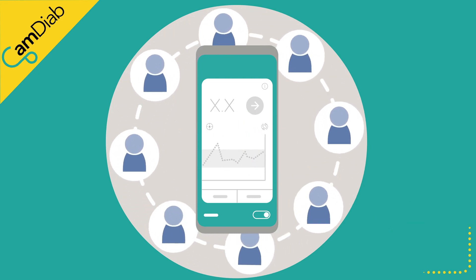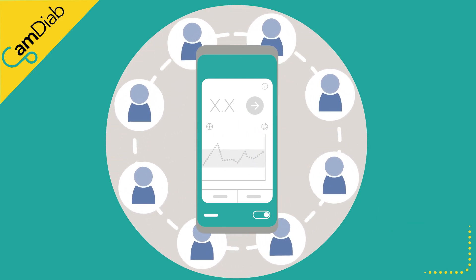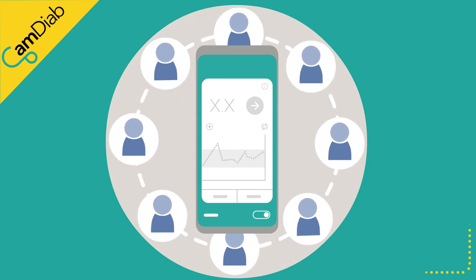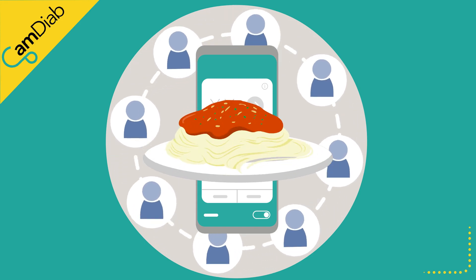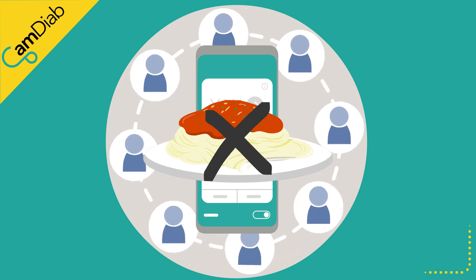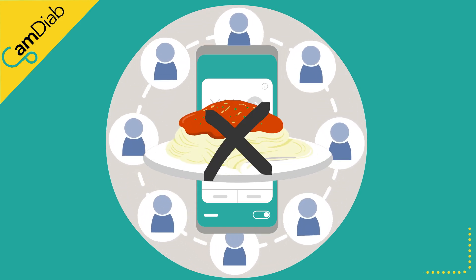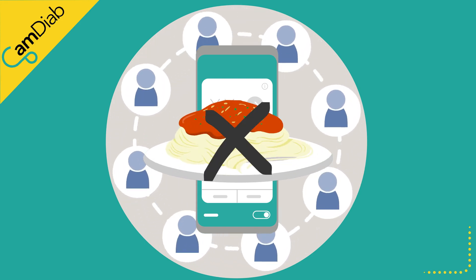Due to the speed of insulin action, the algorithm may not be able to prevent high glucose levels if large amounts of carbohydrates are entered in add meal.